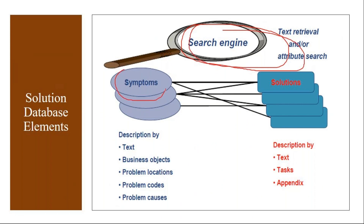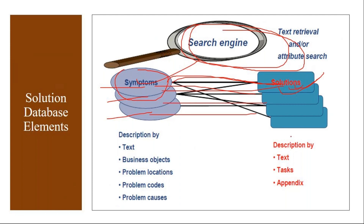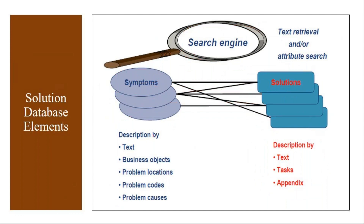In the solution database search engine, you have different kinds of problems and symptoms, and for each symptom, what is the solution — that you maintain. You create symptoms and solutions and link them. For each solution, what tasks need to be performed can be maintained through catalogs. Whenever a customer agent gets a call from the customer, based on the problem they do a search and according to the symptom, they find the solution and propose it to the customer.